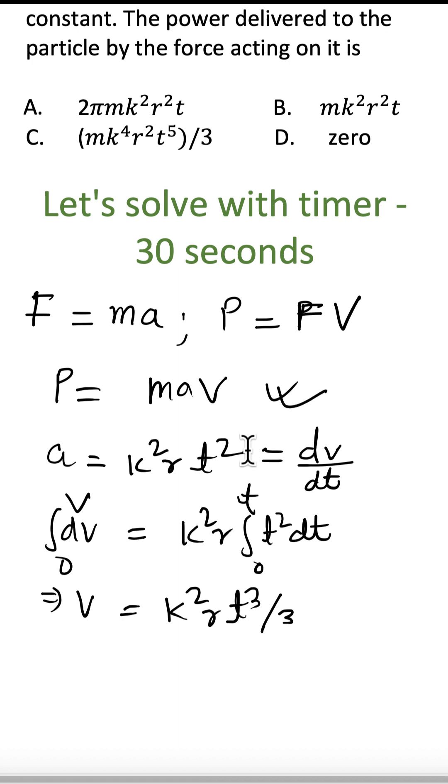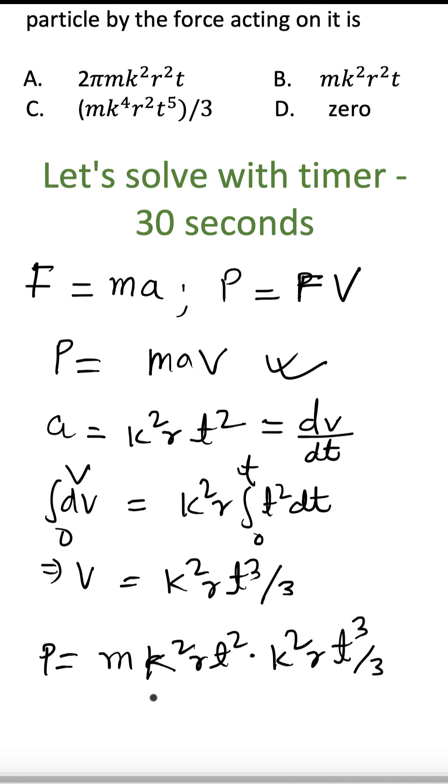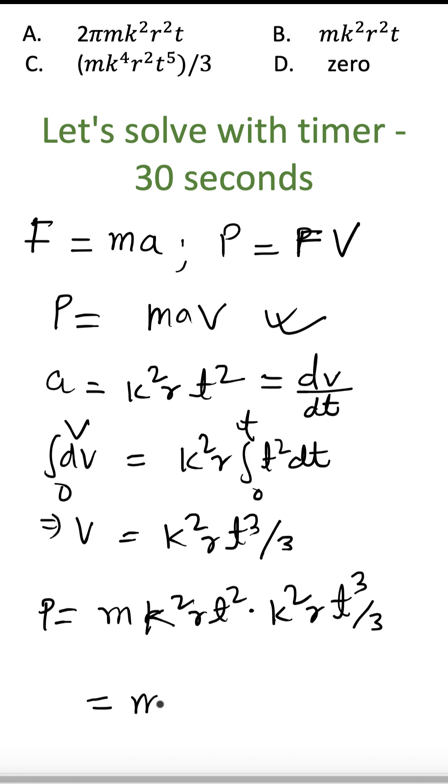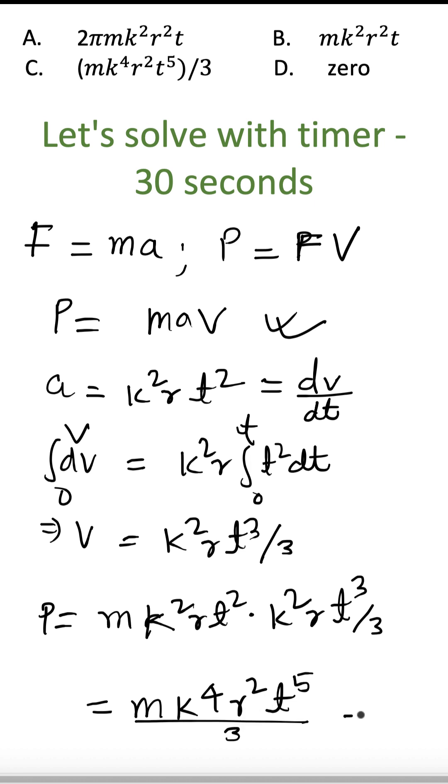Therefore from here we get power as m k square r t square. It is given. And v is k square r t cube by 3. So therefore it becomes m k 4 r square t 5 by 3. And hence the answer is c.